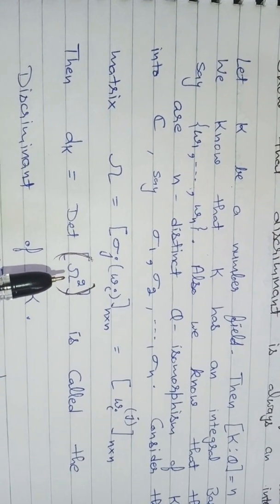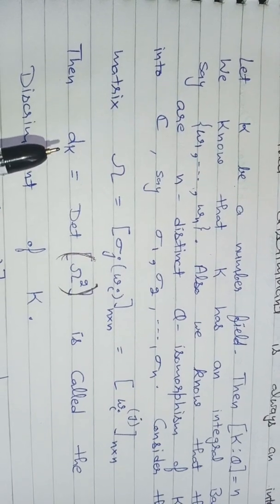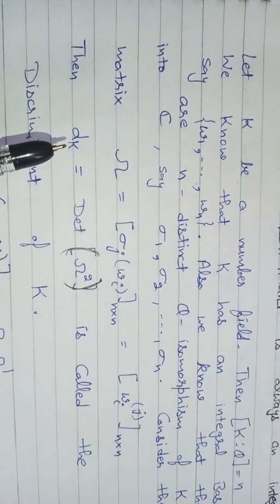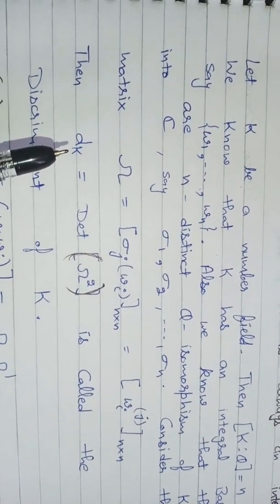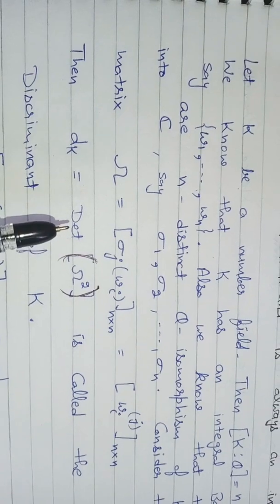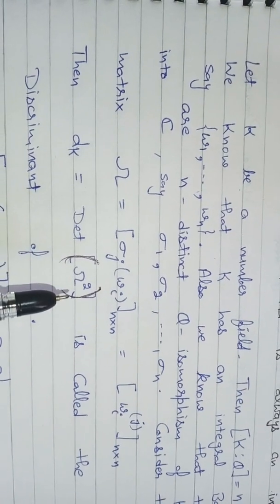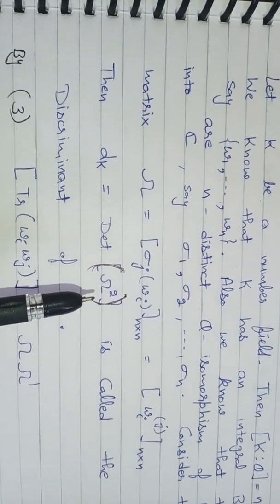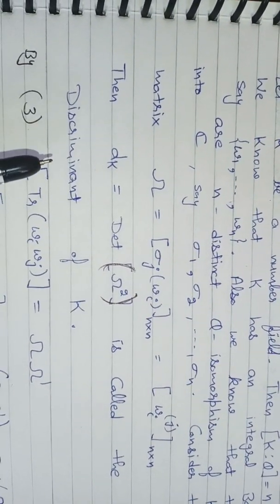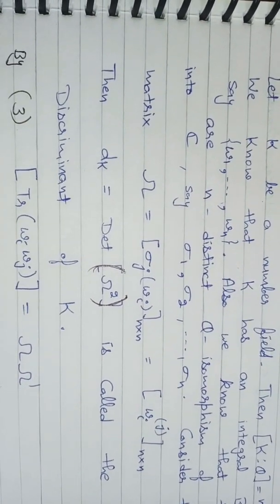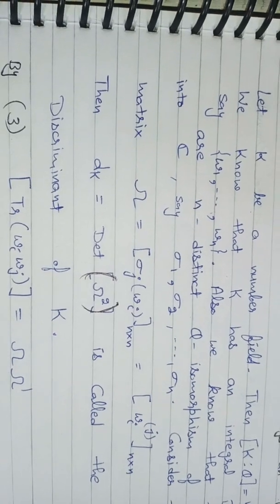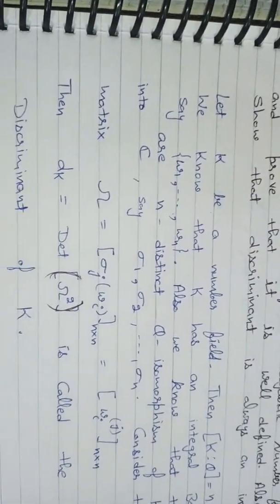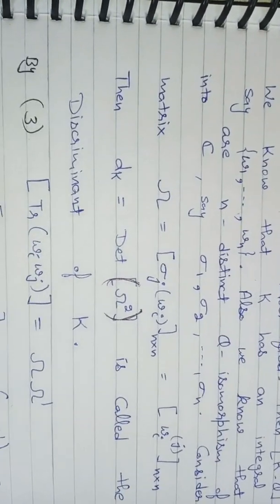The discriminant d_K is the determinant of Omega squared. So d_K is basically the determinant of Omega squared, and we call this d_K the discriminant of K.